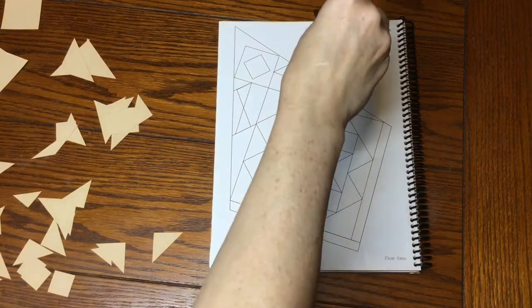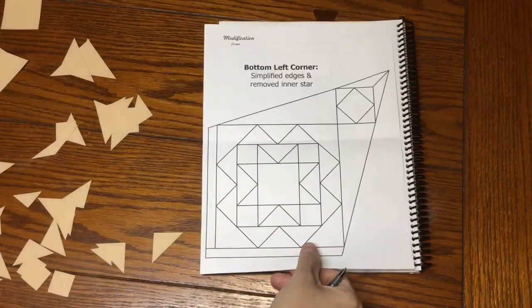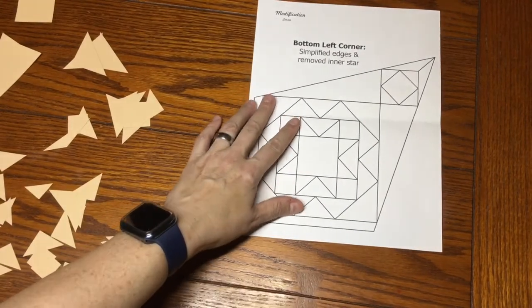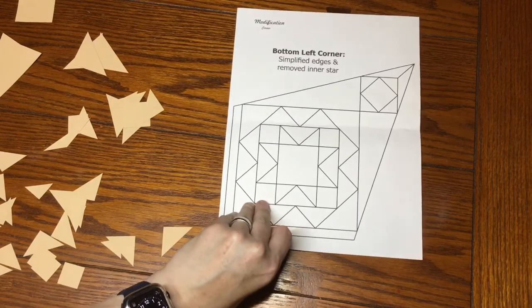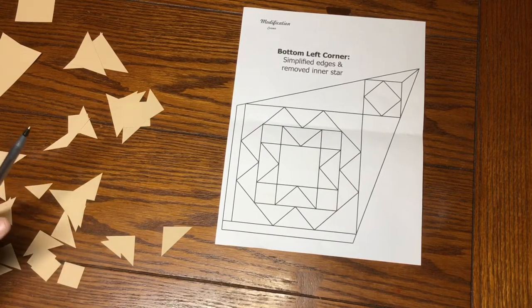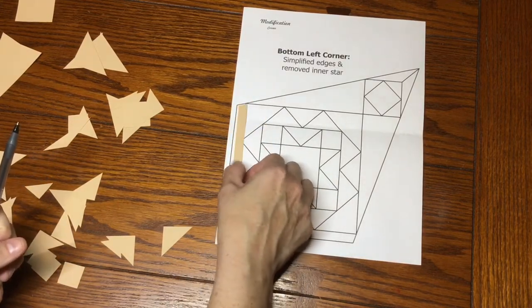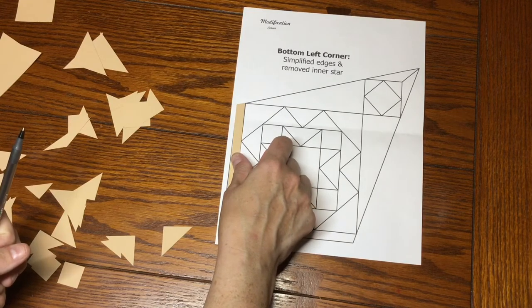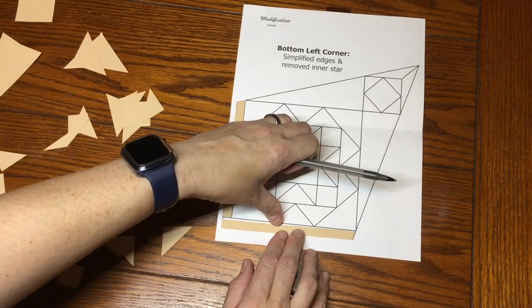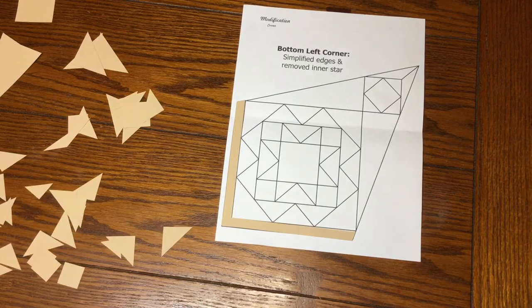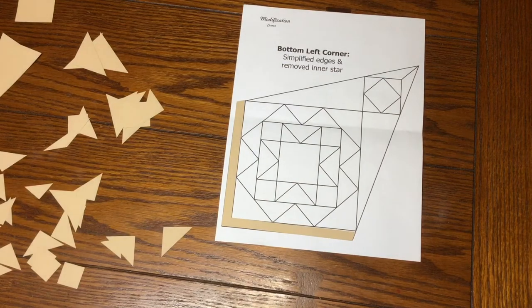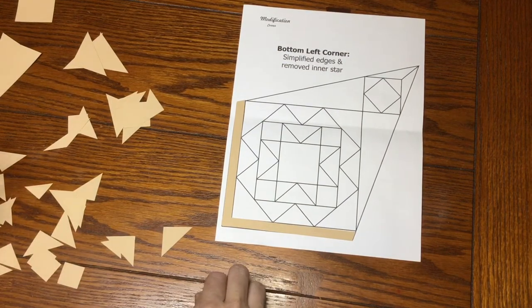So now we're at the bottom left, and the bottom left is modified, so we're going to go to the diagram here. And I'm actually going to put this directly on the table because it's a little wider than the book is. And then we're going to place our strips, and we have a lot less triangles to deal with now. So I've simplified it to make it the same type of design, but easier to accomplish.